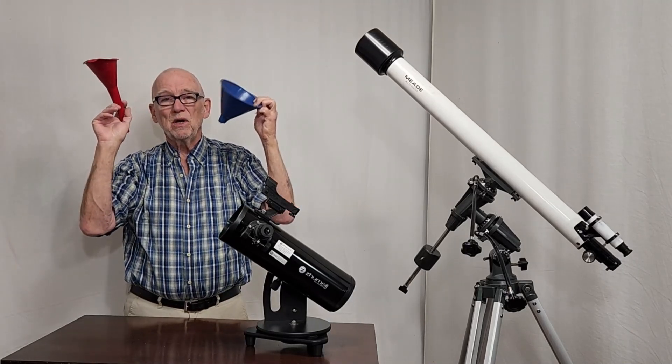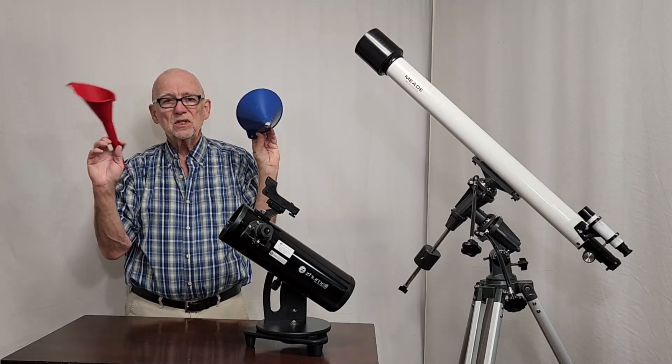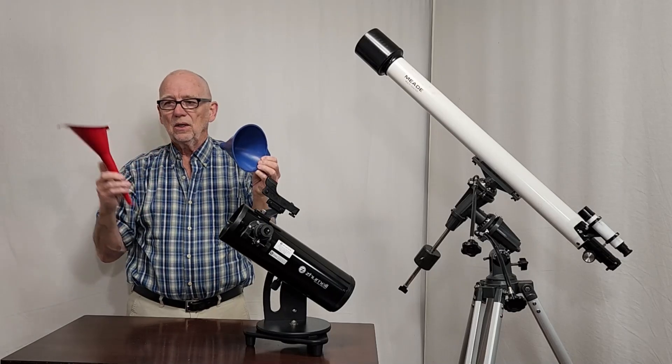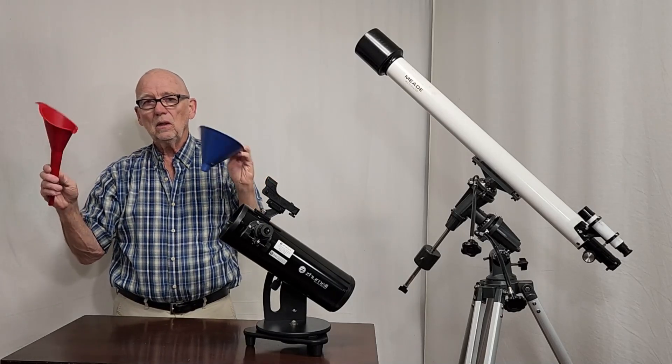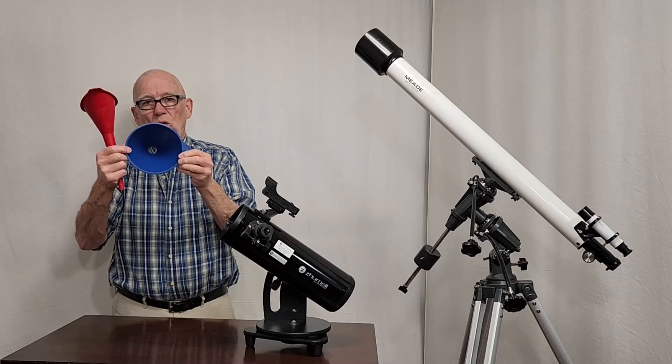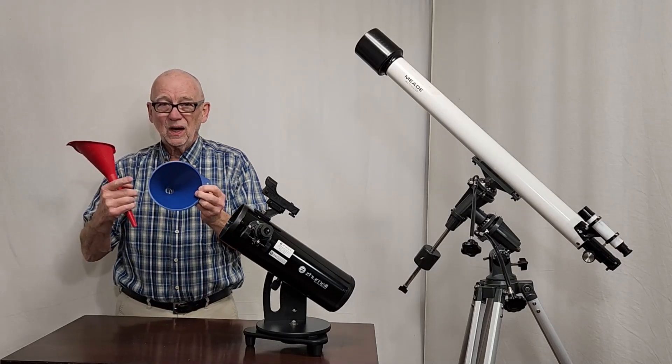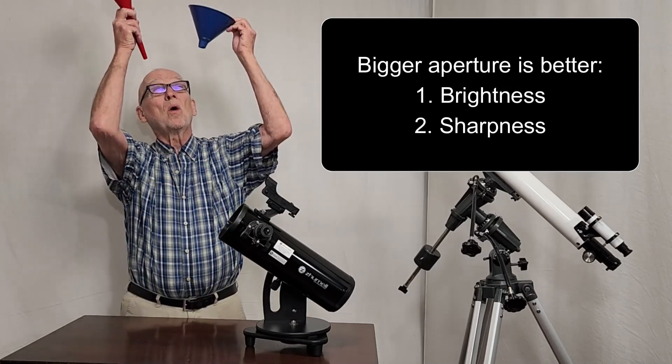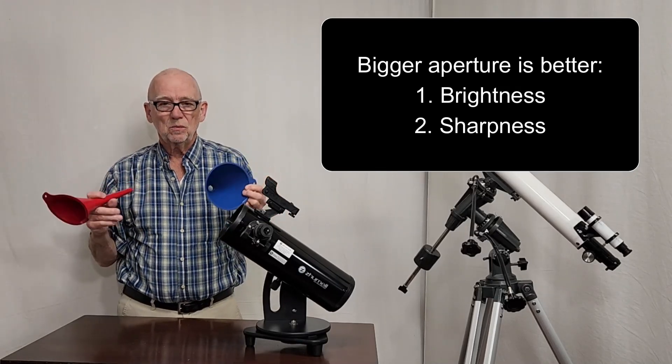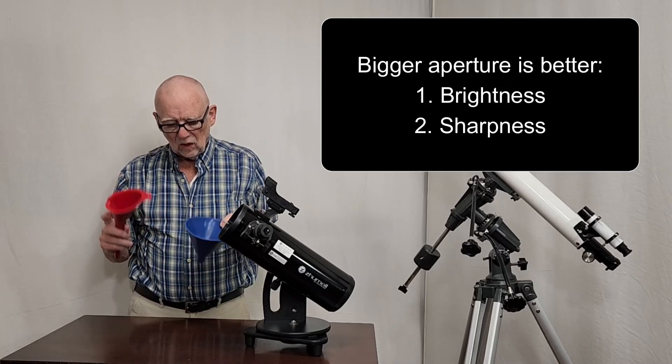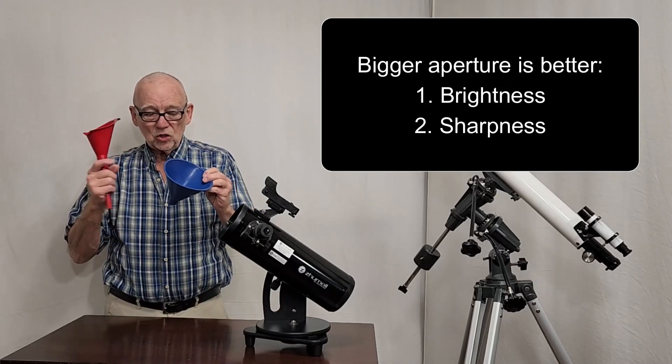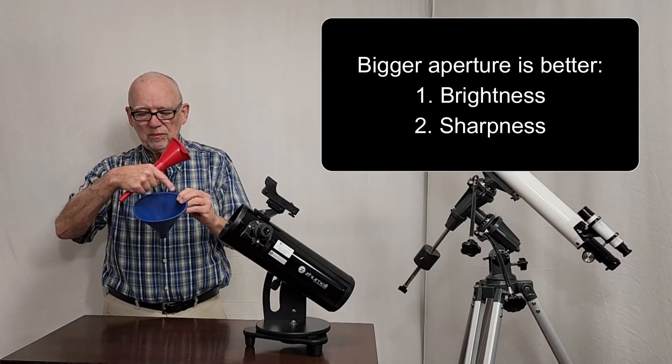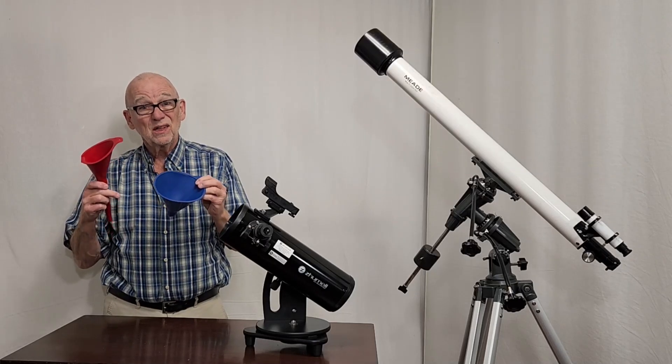If you want to collect as much light as possible, which of these funnels are you going to select? Do you want the long skinny funnel or the big fat short funnel? Well obviously you want the big fat short funnel because it collects more of the faint light coming from distant stars. So you want a short, fat, bigger opening kind of telescope.